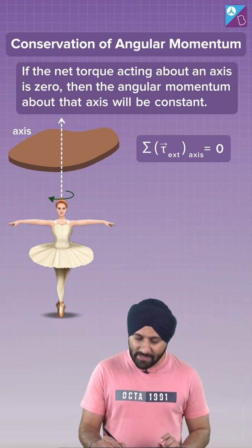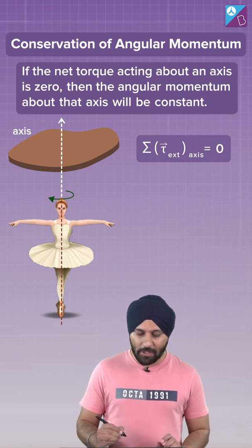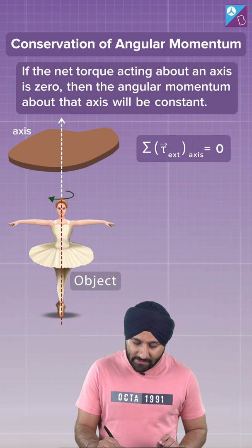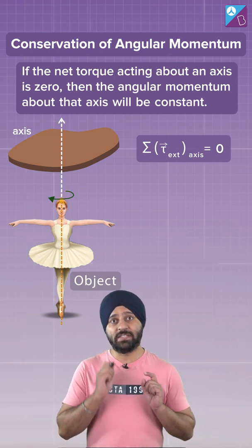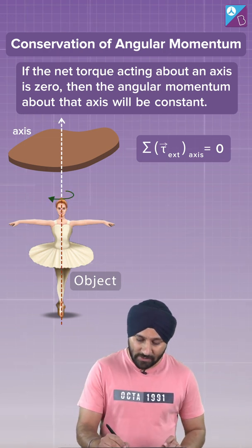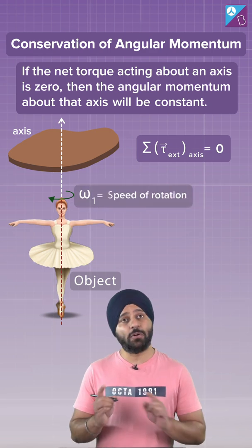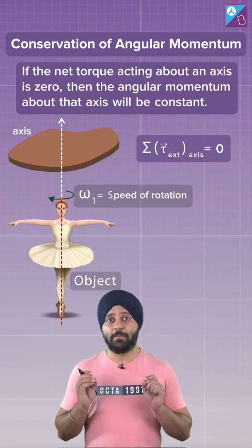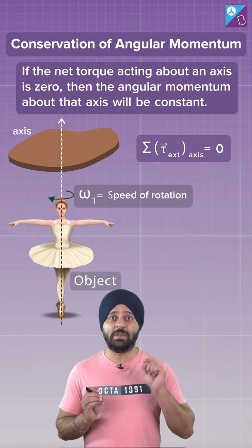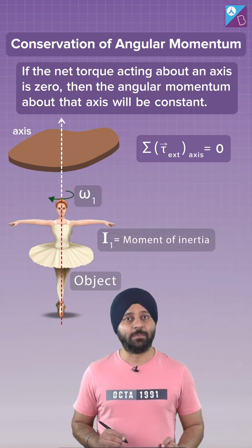Let's consider an axis of rotation here. You can consider the ballet dancer as an object which is revolving or rotating about this axis. Suppose omega 1 is the speed of rotation, and because she has some mass, she must have some moment of inertia, which is I1.